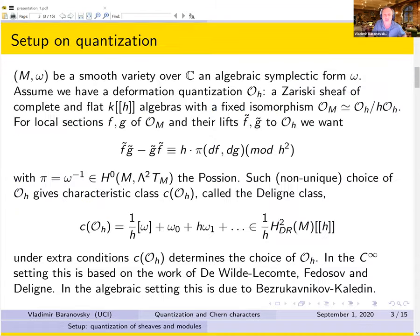The setup on quantization: we start with a smooth algebraic variety over the complex numbers and an algebraic symplectic form. Such a smooth variety would have to be of even complex dimension 2n. A problem that comes originally out of mathematical techniques of quantum theory is to try to consider deformation quantization for the sheaf of regular functions on M.